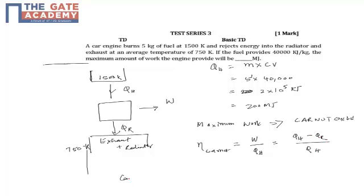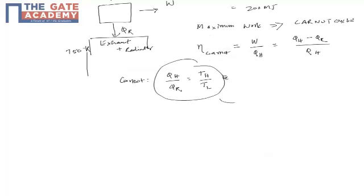For Carnot only we have a special relation which relates the heat addition by heat rejected to the temperature. It varies in the ratio of the temperature of the source and the temperature of the sink. So based on this, this is the relation existing only for the Carnot cycle.